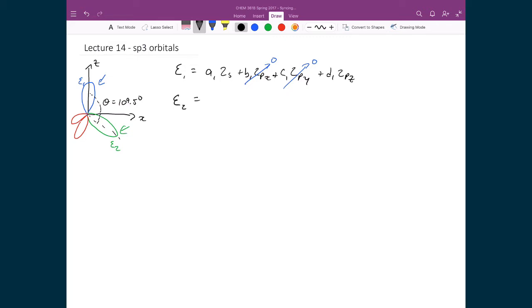Our second hybridized orbital ξ2: we have a2 times 2s plus b2 times 2px plus c2 times 2py plus d2 times 2pz. What we can do is cross off this 2py term. That's because we've forced our ξ2, our second hybridized orbital, to point in or lie along the zx plane, which means it has no component in the y direction.